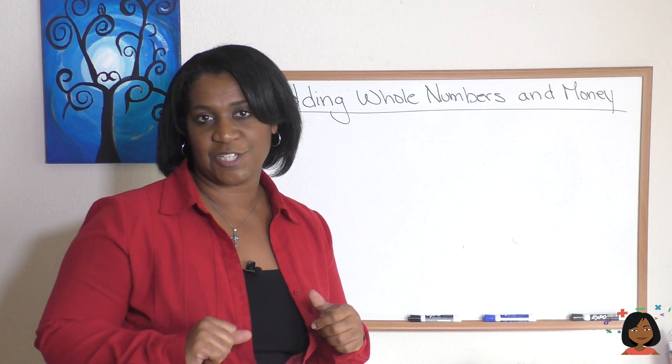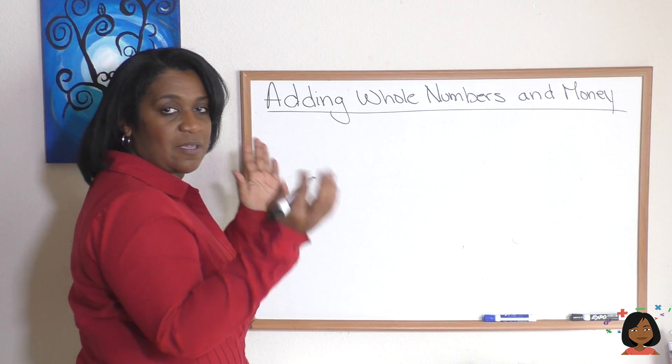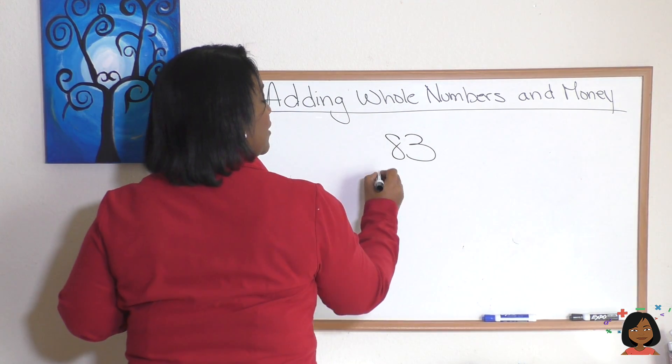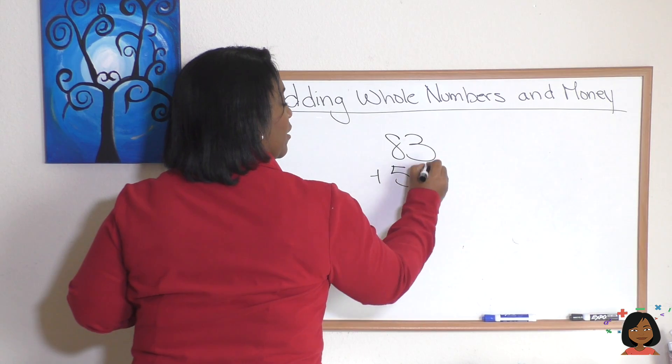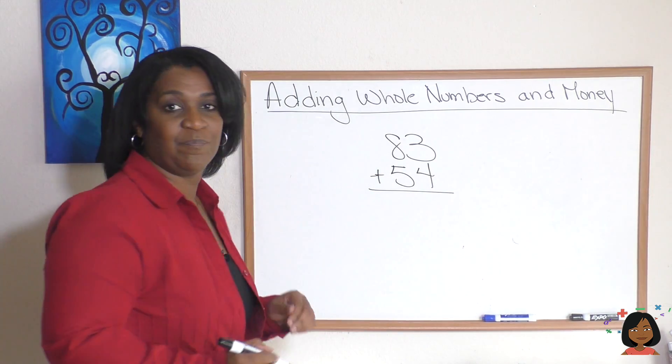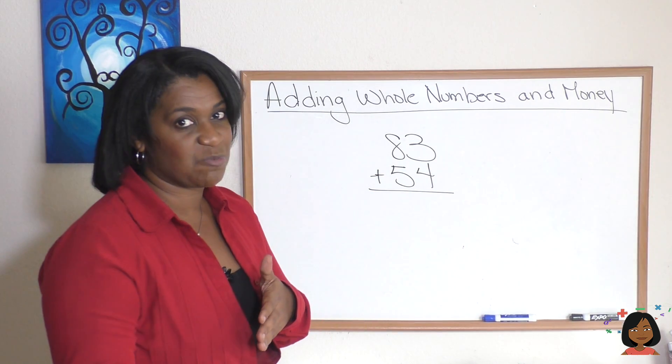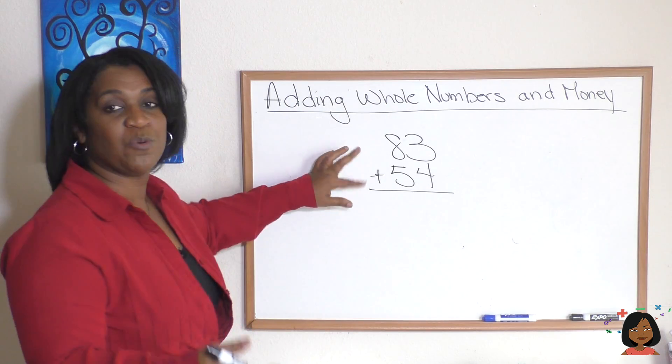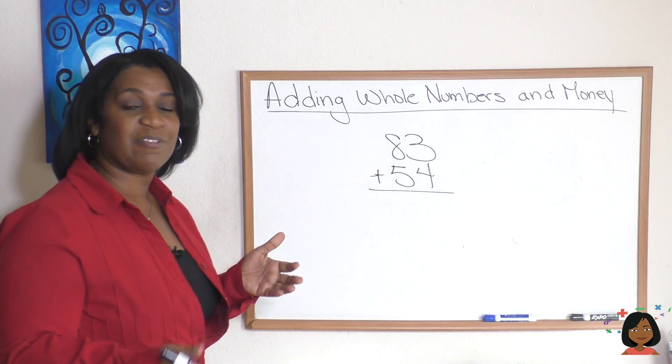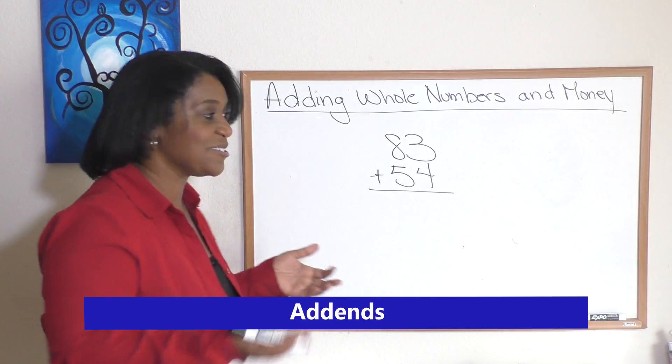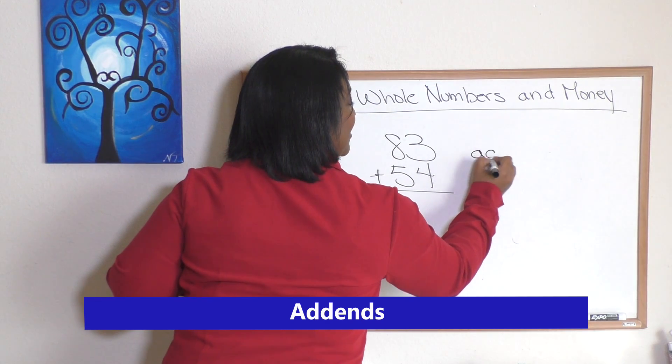Let's do it, get started. I'm going to pick some simple numbers, 83 and 54, and we're going to add these together. But before we do that let me share some definitions. So these two numbers when we're adding them together they are called addends. It's a pretty simple title, addends.